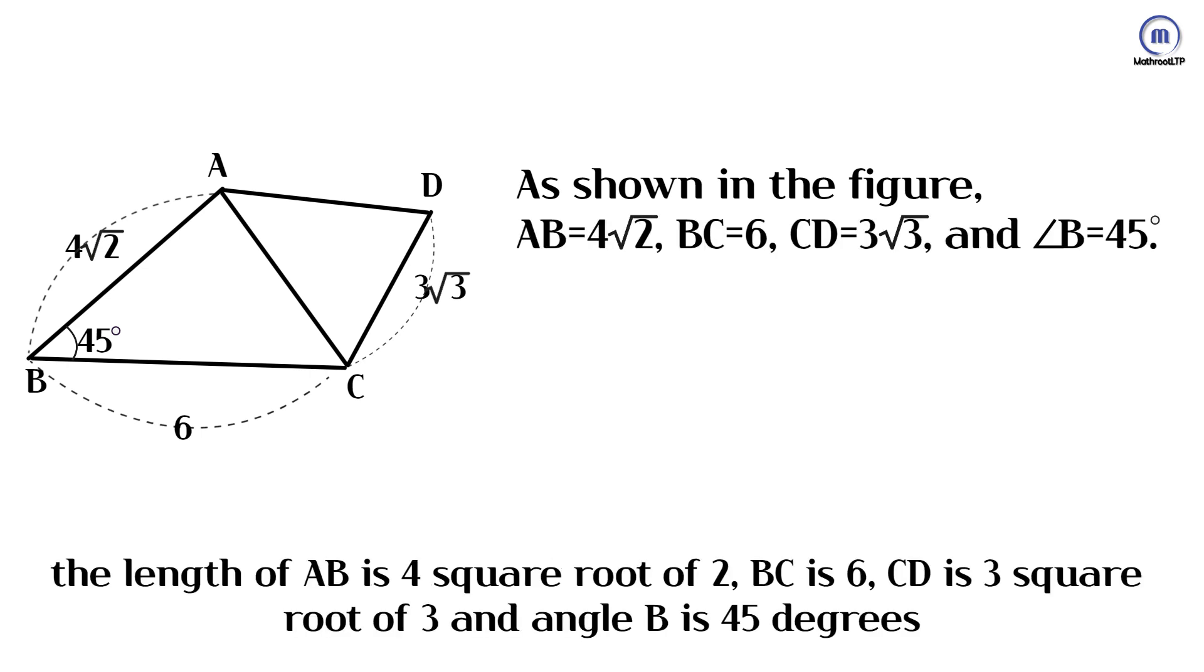As shown in the figure, the length of AB is 4 square root of 2, BC is 6, CD is 3 square root of 3, and angle B is 45 degrees.